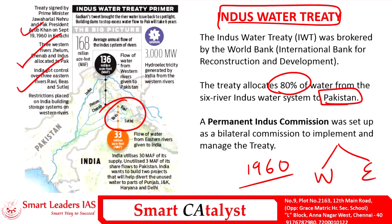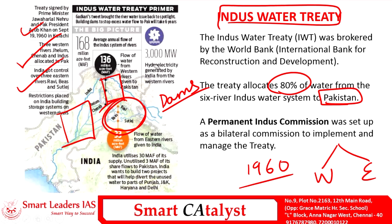However, the treaty allocates a total of eighty percent of the water from the six tributaries of Indus to Pakistan. India is the upper riparian state and Pakistan is the lower riparian state, meaning the Indus flows from India to Pakistan. Certain restrictions are placed on India for building storage systems such as dams or hydroelectric power projects which may block the flow of water to the lower riparian state. Currently about 3,000 megawatts of hydroelectric power is generated from the west bank tributaries, which are under Pakistan's control.